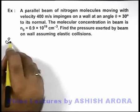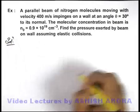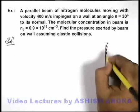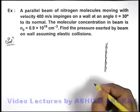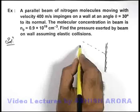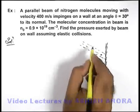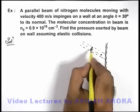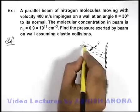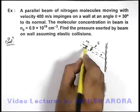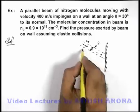To understand the problem let's first draw the pictorial situation. Here we are given that there is a wall, on this wall a beam of nitrogen molecules is incident onto it. Let us consider the area of beam to be S and the molecular concentration is n₀, and we assume that these molecules are approaching at a speed v.